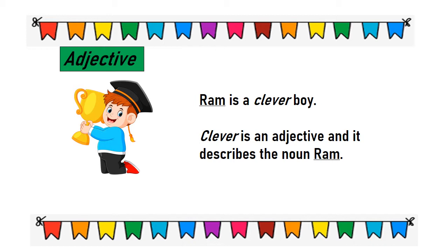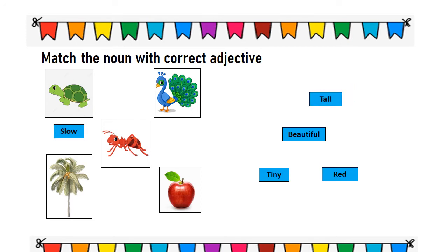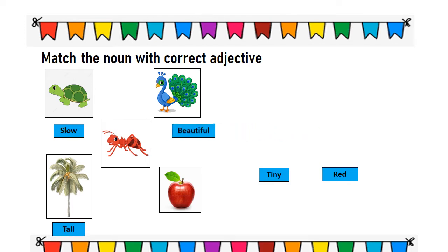Let's match the noun in the picture with its correct adjective. Slow tortoise, tall coconut tree, beautiful peacock, tiny red apple.